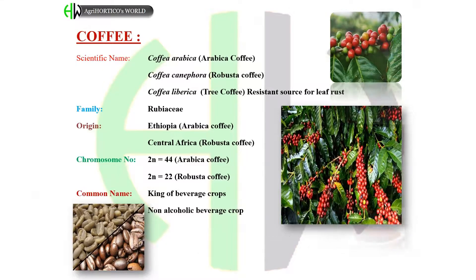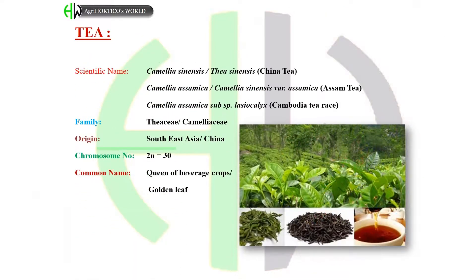Tea: scientific names — Camellia sinensis or Thea sinensis for China tea; Camellia assamica or Camellia sinensis variety assamica for Assam tea; Camellia assamica subspecies lasiocalyx for Cambodia tea. Family: Theaceae. Origin: Southeast Asia. Chromosome number: 2n = 30. Common names: Queen of beverage crops, golden leaf.